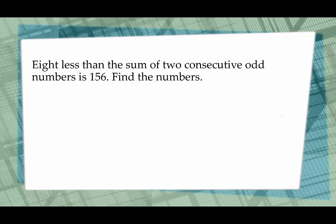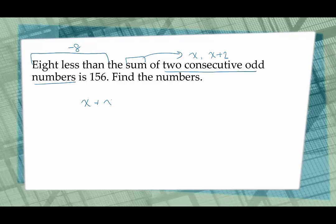In this example, eight less than the sum of two consecutive odd numbers is 156. Since I say odd, that implies they are integers. Eight less than means we're taking eight away from the sum. To represent the odd numbers, I call the first one x and the next one x plus 2. So the equation is (x plus x plus 2) minus 8 equals 156. Removing the parentheses doesn't change the problem.